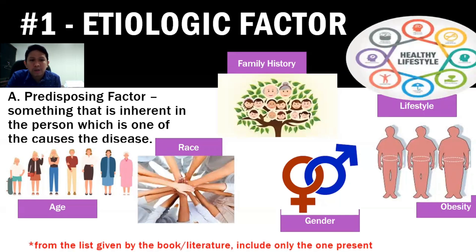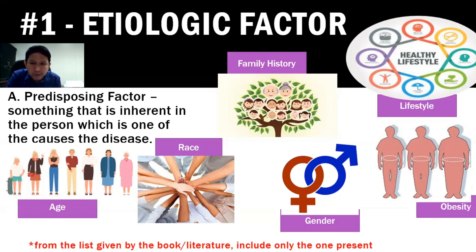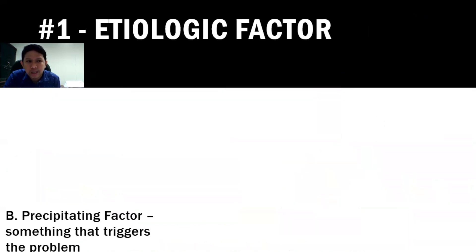Using your medical-surgical nursing textbooks and reliable internet literature, you can read about the predisposing factors for a disease like ischemic stroke. However, in the concept map you are required to do, include only the factors present in your patient. You can find these in the patient's history and demographic data.